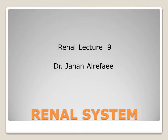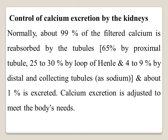Lecture 9 of the renal system: renal calcium excretion. Normally, 99% of the filtered calcium will be reabsorbed by the tubule. This is divided as 65% reabsorbed by the proximal tubule, 25 to 30% by the loop of Henle, and about 4 to 9% by the distal and collecting tubule. The remaining 1% is excreted in the urine.